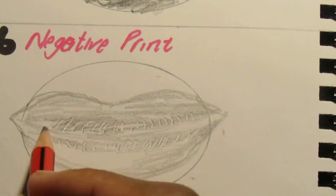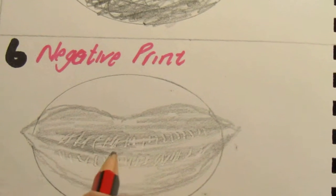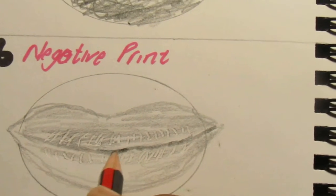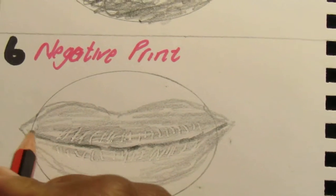negative print. I'm just gonna make the line darker. You can see the darkness of the lip as well. I'm just using a lip as an example because this is the perfect one to